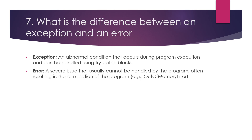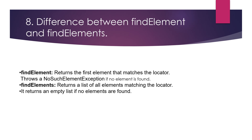What is the difference between an exception and an error? An exception is an abnormal condition that occurs during program execution and can be handled using try-catch blocks. An error is a severe issue that usually cannot be handled by the program, often resulting in the termination of the program — for example, an OutOfMemoryError.